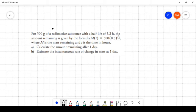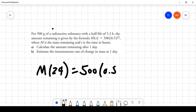So the amount M that will be left after 24 hours, M(24), shall equal 500 times 0.5 to the power of 24 over 5.2.